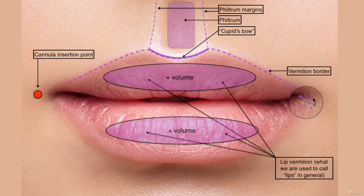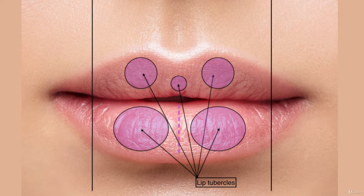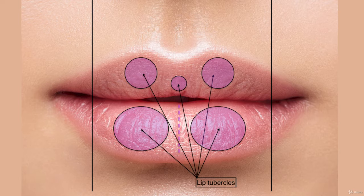There is something called tubercles in the lip. The lower lip has fuller sides and is a little more empty in the middle — it's like a berry shape, a round shape. You can enhance that by placing filler directly in the lip. In this case, you will need to use a needle.